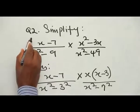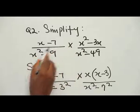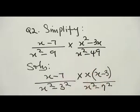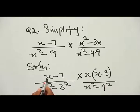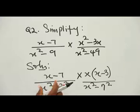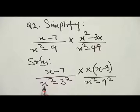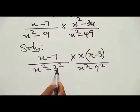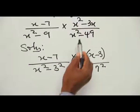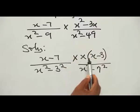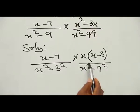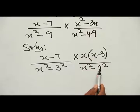Question number 2: Simplify (S minus S minus 7) all over (S squared minus 9) times (S squared minus 3S) all over (S squared minus 49). We take the numerator of the first term, which is S minus 7. For the denominator, S squared minus 9 is written as S squared minus 3 squared — it is a perfect square. Multiplying this by the second fraction, we factorize: S is common in the numerator, leaving S(S minus 3).